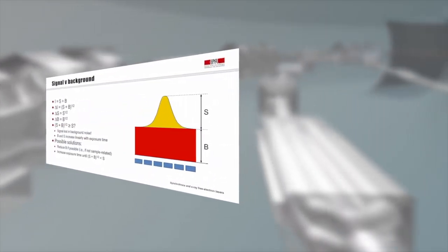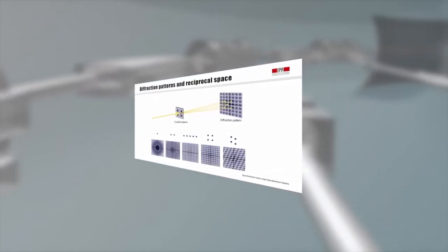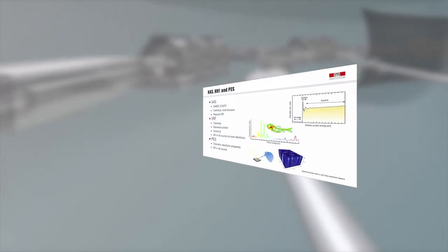My name is Phil Willmott, titular professor of physics at the University of Zurich and science coordinator at the Swiss Light Source synchrotron facility at the Paul Scherrer Institute in Switzerland.